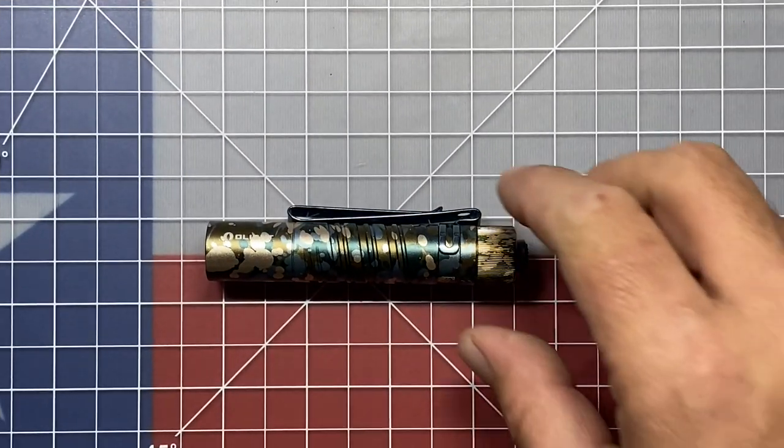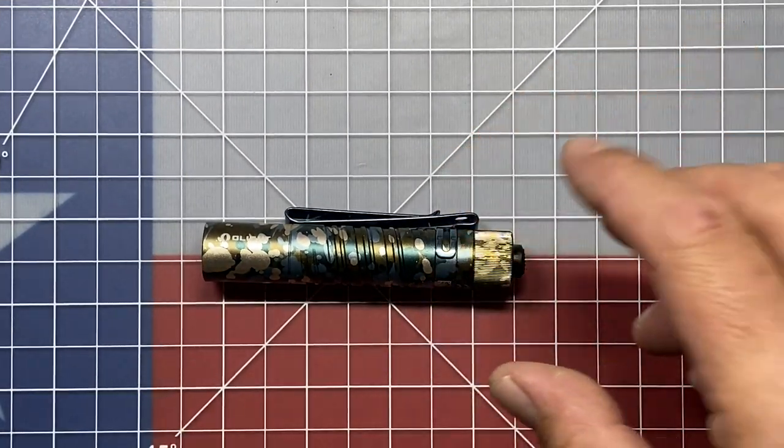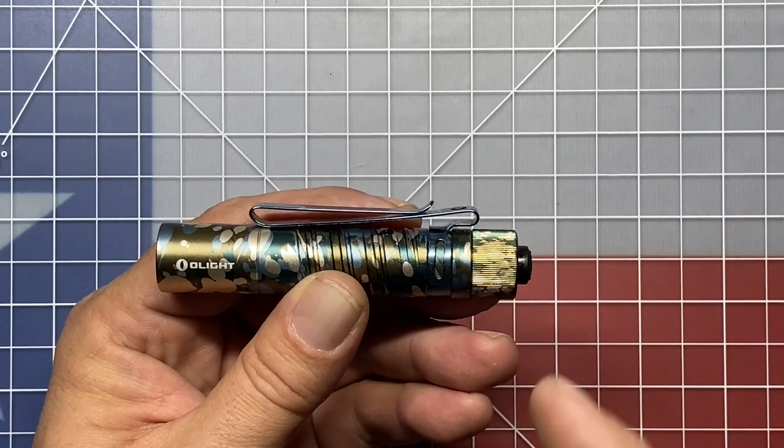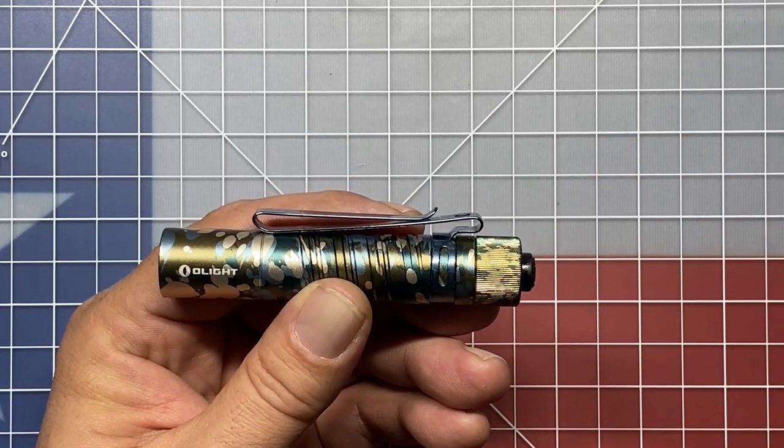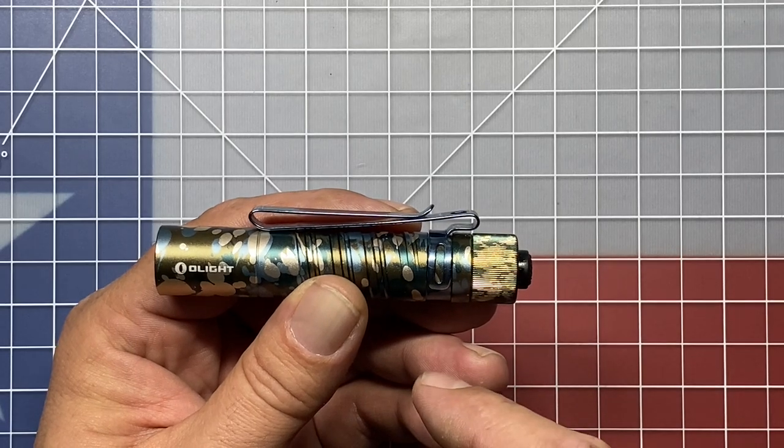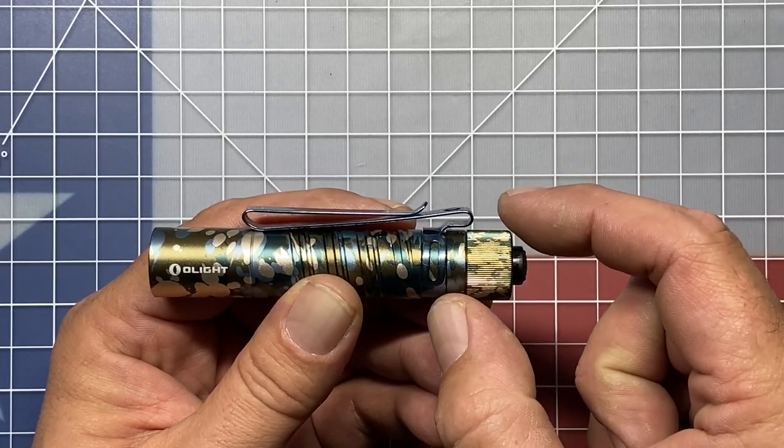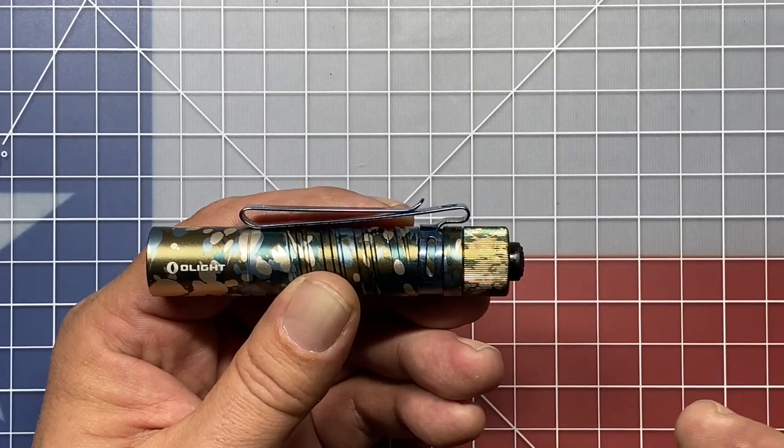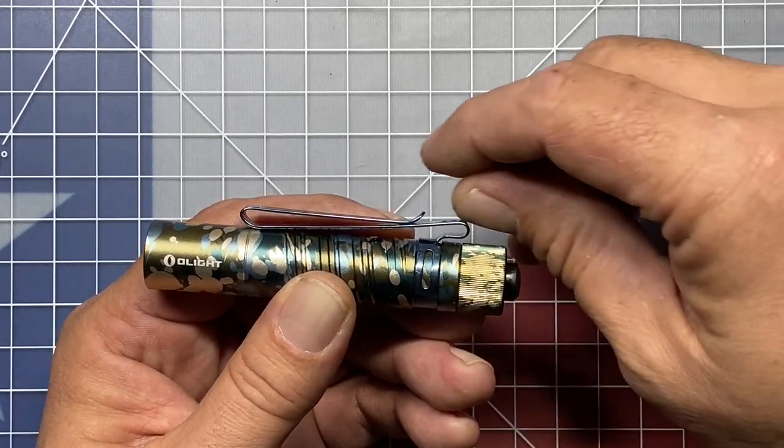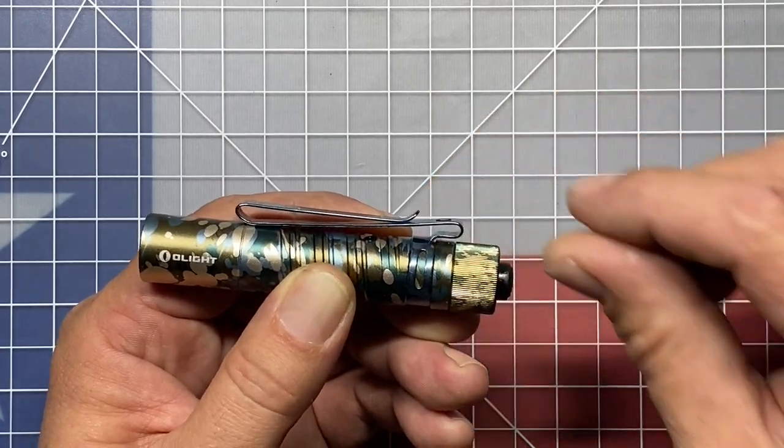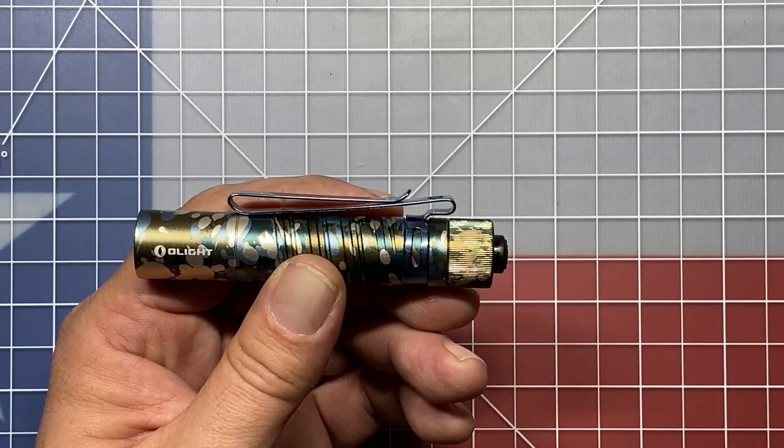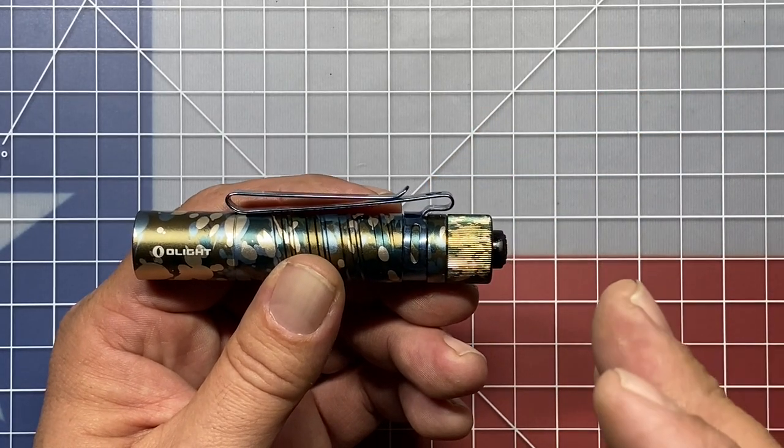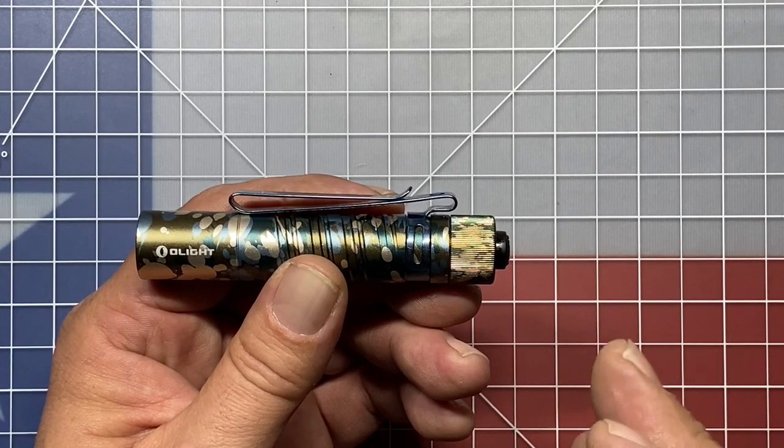Before we hop into the light settings, one other thing I want to mention that I like a lot about this light is the dual position pocket clip. Now I wished it was just a touch deeper, at least about a half inch exposed off the top when you're carrying in the pocket. But I do like the fact that they're adding all these dual position clips to most every light that comes out these days.